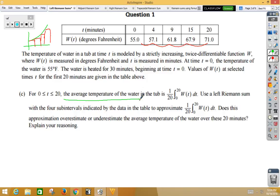This time, they want the average temperature of the water in the tub. Well, if you think about an average, you find an average by adding the numbers up and then dividing by how many numbers there are. That's where the 1/20th comes into play. Because you're going from 0 to 20, you need to divide by 20 at the end. Again, left Riemann sum, four subintervals, so n is 4. Let's go ahead and start.